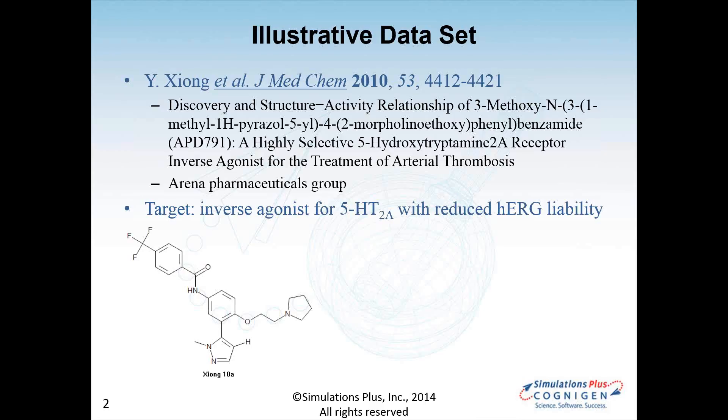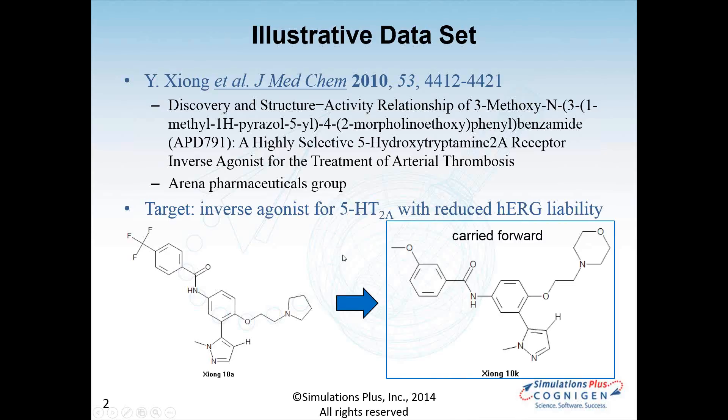The data set that I'm going to use to illustrate this is taken from Zhang back in 2010. They were working on inhibitors, or inverse agonists actually, for 5-HT2A in order to treat arterial thrombosis. This is from ARENA. The situation was they had a good lead but were worried about the HERG liability that they'd found. What they ended up carrying forward is the compound 10-K at the left, where they've replaced the piperazine with a morpholine and the CF3 with a methoxy group.